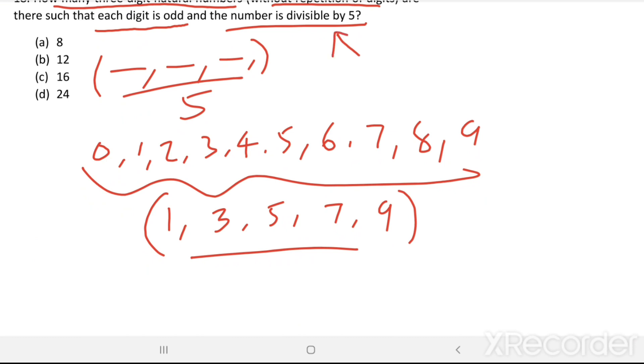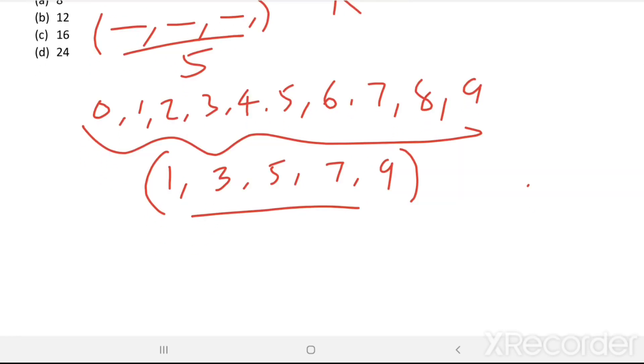If a number is divisible by 5, then its last digit should be either 0 or 5. Then here we have to use odd digits, so the last digit should be 5.